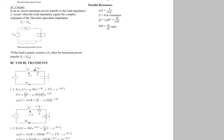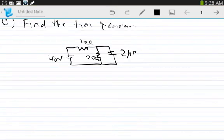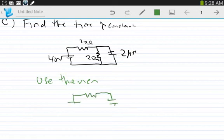They give you this circuit here. We need to get the circuit in this form: R, RC. The time constant will be RC. The easiest way to do that is using Thevenin to get an equivalent circuit.